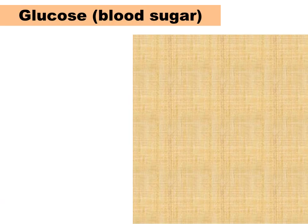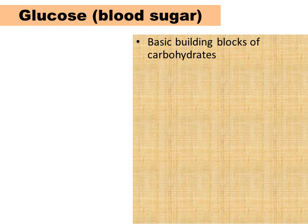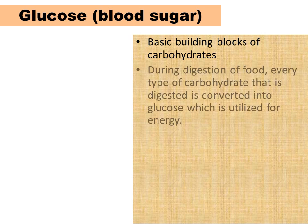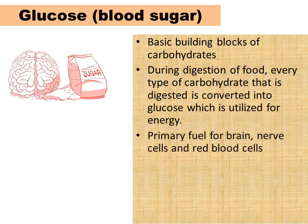First is glucose, which is an important monosaccharide and a building block of many carbohydrates. During digestion of food, every type of carbohydrate that is digested by the intestinal tract is eventually converted into glucose, which is utilized for energy. Other monosaccharides like fructose and galactose have to be first converted into glucose to release energy. That is the reason glucose is the main source of energy for the brain, red blood cells and nerve cells.